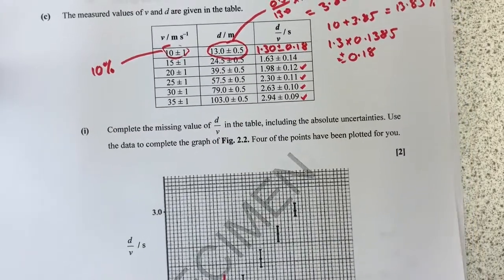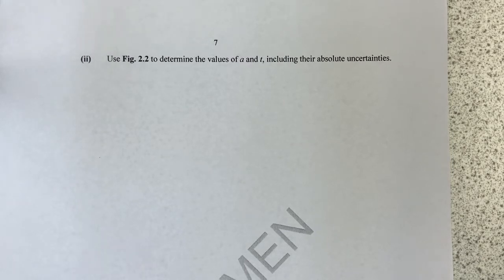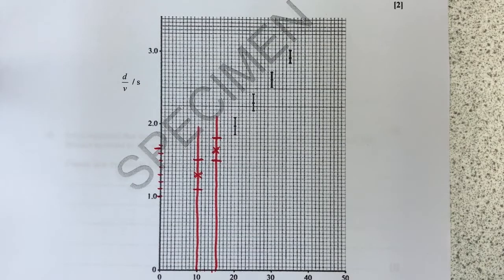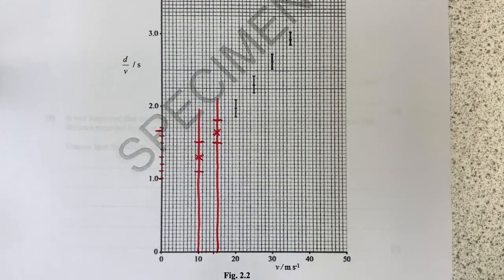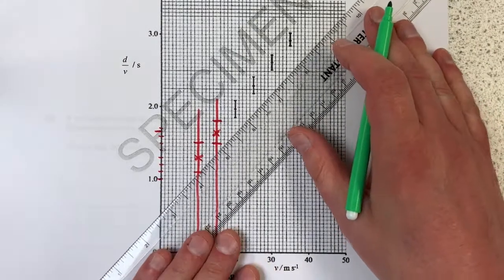And hopefully that will score me all the marks there, plotting the graph. Now I'm going to have to keep flicking back to this page for the next part of the question. Determine values of a and t, including their absolute uncertainties. Let's get a ruler out and get this done.